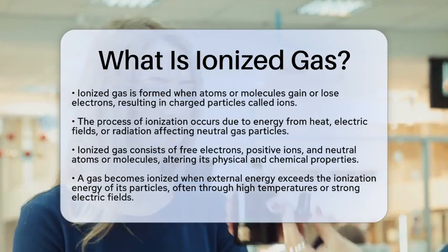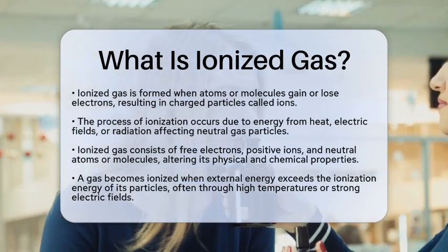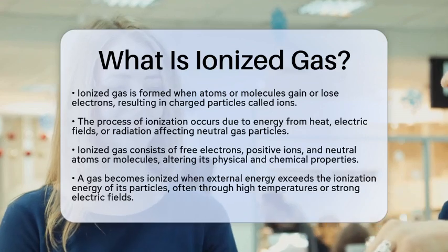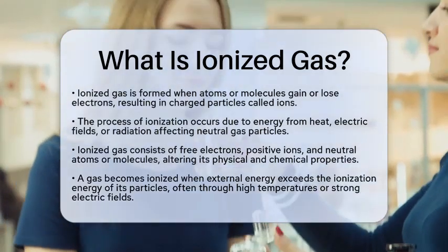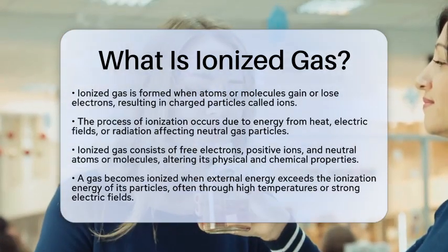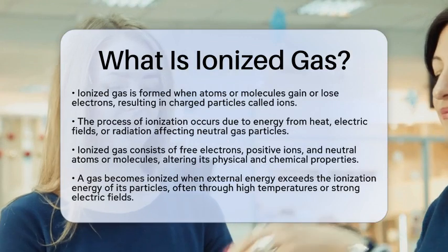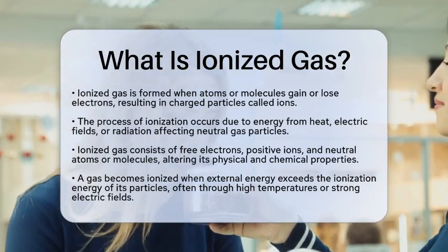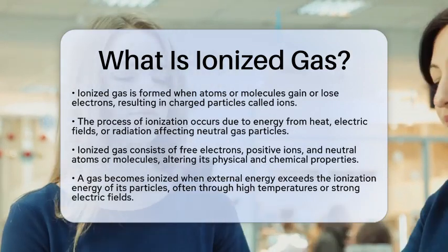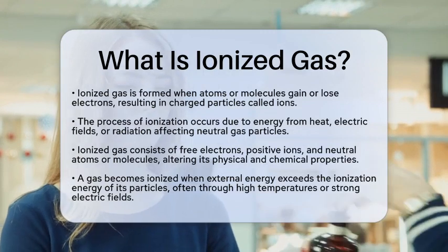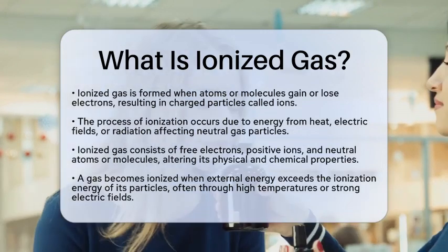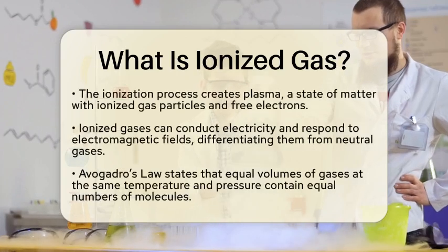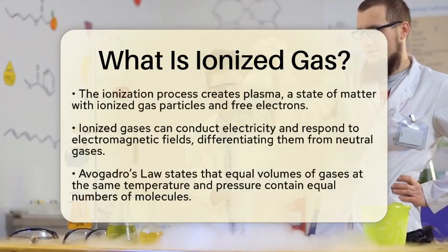A gas becomes ionized when external energy surpasses the ionization energy of its particles. For instance, heating a gas to very high temperatures or applying a strong electric field can strip electrons from atoms. This process creates plasma, which is a state of matter where ionized gas particles coexist with free electrons.